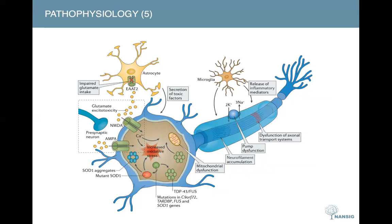On a molecular level, glutamate-mediated excitotoxicity occurs due to dysfunction of the astrocytic excitatory amino acid transporter 2, the EAA2 transporter, as shown by the arrow. This results in reduced uptake of glutamate from the synaptic cleft. Glutamate excitotoxicity leads to excessive activation of the ionotropic glutamate receptors — the NMDA and AMPA receptors — thereby inducing neurodegeneration via activation of calcium-dependent pathways and generation of free radicals. Please keep the NMDA receptor in mind, as I will refer to it again when we arrive at the management of the disease.